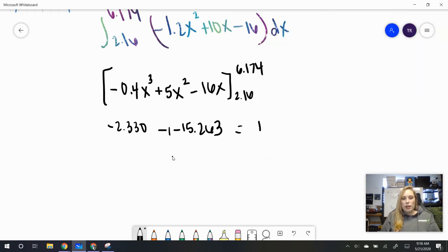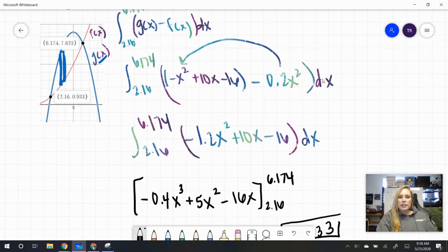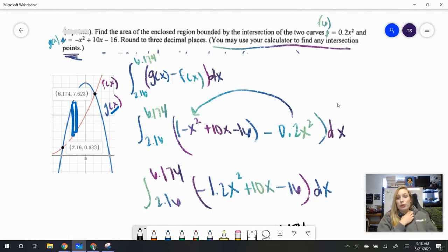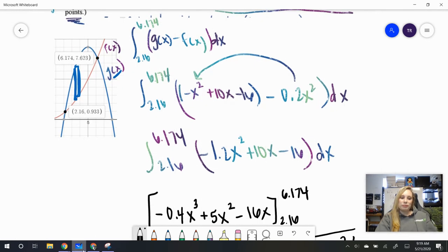So, we get 12.933. And there we have it. Let's go back just for a moment and recap what we did. We were asked to find the area enclosed between these two curves. We graphed the curves, and using that graphing technology, we were able to find the points of intersection. We figured out which one was the top curve, subtracted the lower curve from it, and then we integrated, plugged in our bounds, and found that the area bound by those two curves was 12.933.